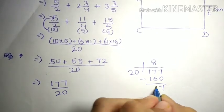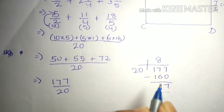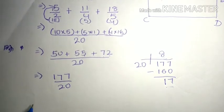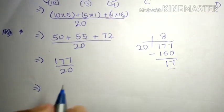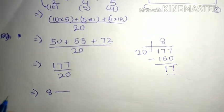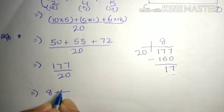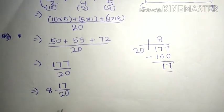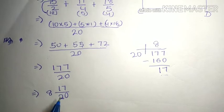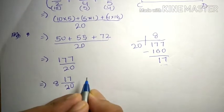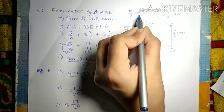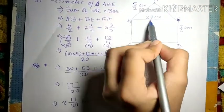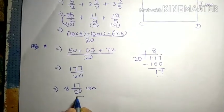The remainder is 17, the quotient is 8, and the divisor is 20. The quotient goes in the whole number place, the remainder goes in the numerator, and the divisor goes in the denominator. So our answer is 8 and 17/20. Since the sides are given in centimeters, the perimeter of triangle ABE is 8 17/20 centimeters.